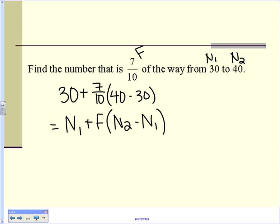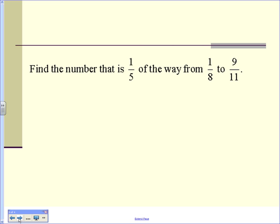What number is 7 tenths of the way from 30 to 40? No, they'll give you all that information. But, a number that is a fifth of the way from 1 eighth to 9 elevenths.